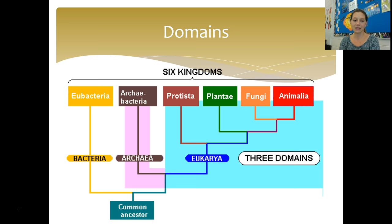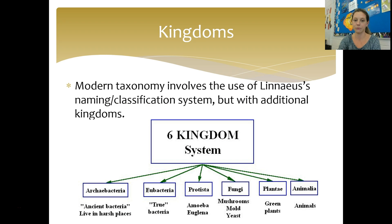Now let's talk about domains. We have three domains: domain Bacteria, domain Archaea, and domain Eukarya. Within those three domains, we have six kingdoms. Domain is the largest, most inclusive level. Modern taxonomy uses Linnaeus' naming and classification system but has added additional kingdoms, since Linnaeus didn't have knowledge about unicellular microscopic organisms. The six kingdoms we accept today are: Archaebacteria, Eubacteria, Protista, Fungi, Plant, and Animal. We're going to spend a lot of time on these, but for today here's a brief overview.